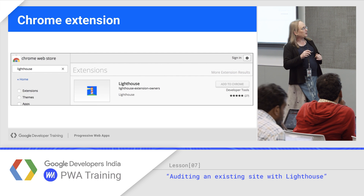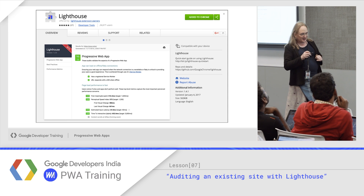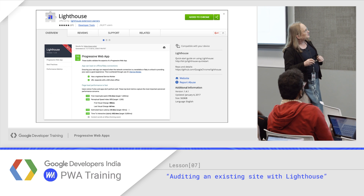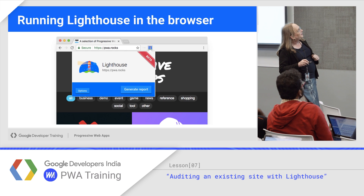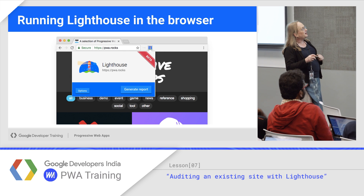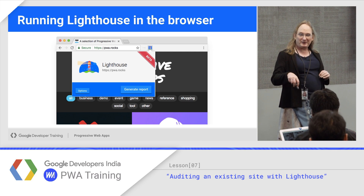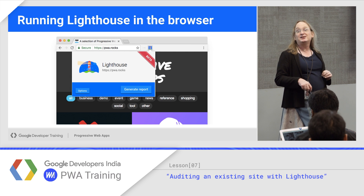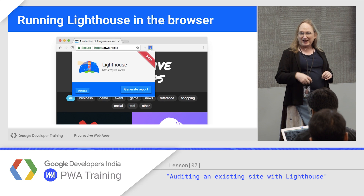You go to the Chrome Web Store and grab it. It will give you a Lighthouse icon. Hit the button to add it to Chrome, go to a site, click the icon, click Generate Report. It exercises the site and creates a report for you. It does require Chrome, even running headless, because it uses some internal debugging APIs that it hooks into and picks data off.